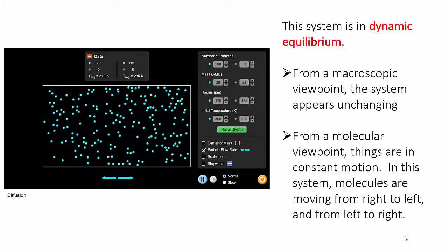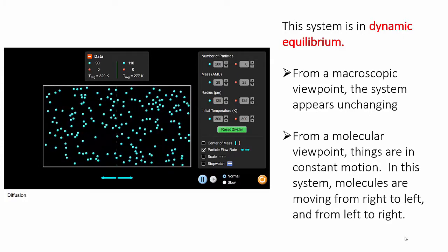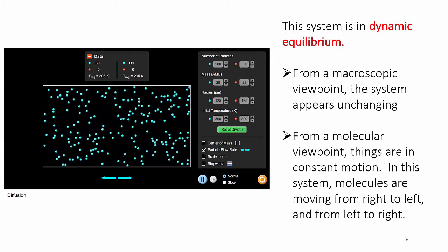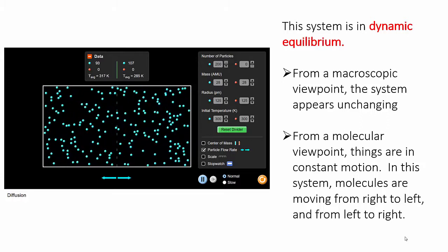At this point, when the left and right flow rates are equal, the system is said to be in equilibrium. Specifically for a chemist, it's in dynamic equilibrium.